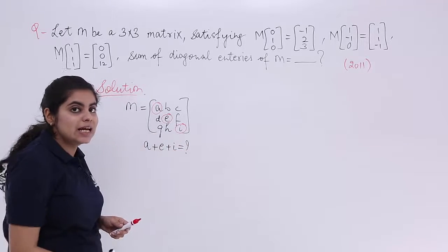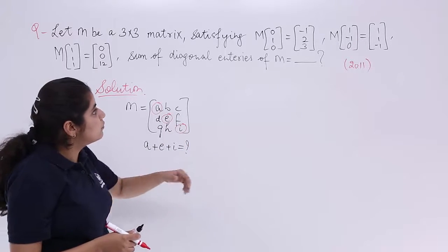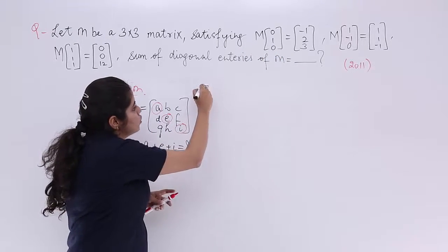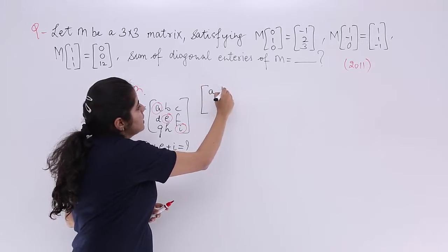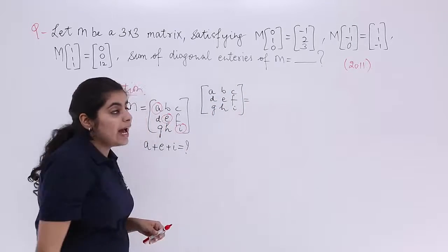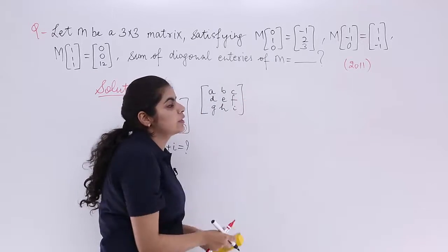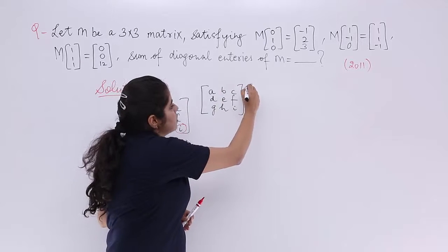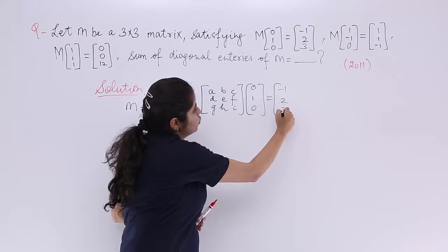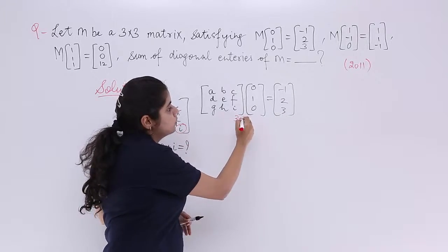Now, moving forward with the equations given. The first equation is M×[0,1,0] = [-1,2,3]. So we multiply the matrix [A,B,C; D,E,F; G,H,I] by the column vector [0,1,0]. This is a 3×3 matrix multiplied by a 3×1 vector, giving a 3×1 result, which we equate to [-1,2,3].